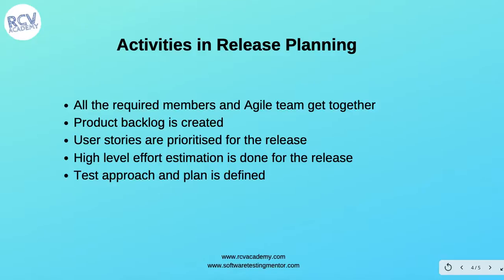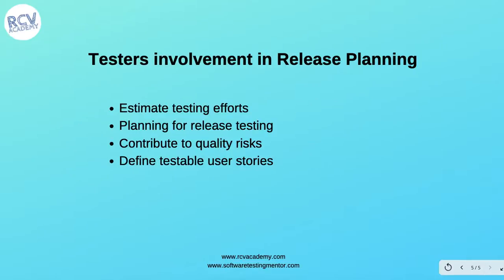The activities in release planning include all required members of the agile team getting together. A product backlog is created for that particular release, and user stories are prioritized based on the end goal or result required. The whole team discusses and prioritizes the backlog. High-level effort estimates are discussed and done for the release, and a testing approach and plan is also defined — including what testing approach and automation will be taken.